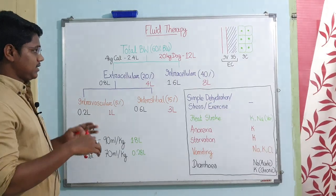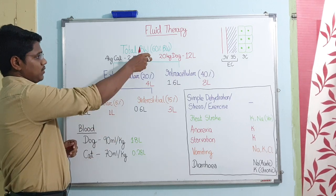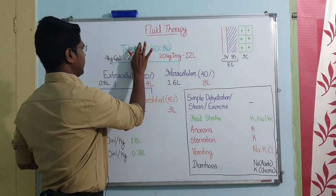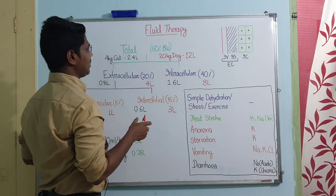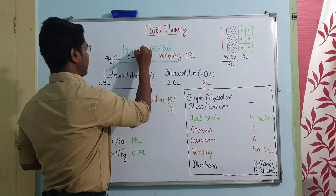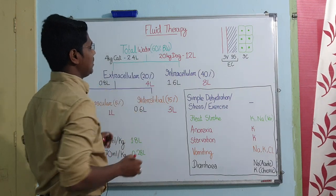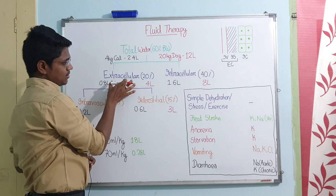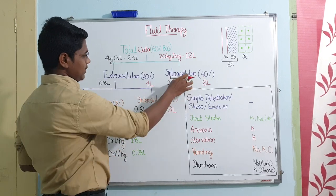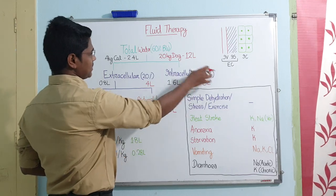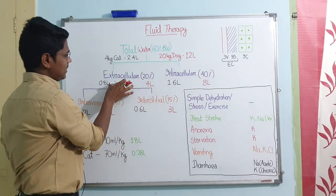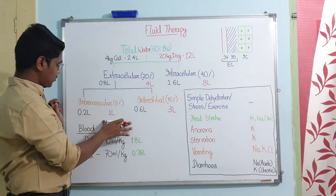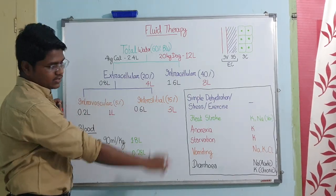First, let us see which are the compartments in which fluids stay. Total body weight - I have taken 60% of body weight as total water. In young animals, it may be up to 70%; in older animals, it may be less than 60%. On average, 60%. This is divided into extracellular and intracellular compartments. The intracellular compartment is the major portion - 40% of this 60% - while the extracellular is 20% of this 60%.